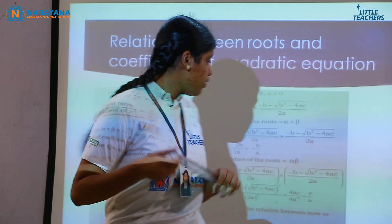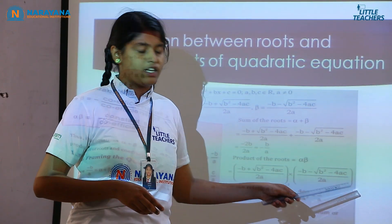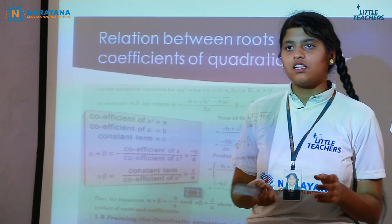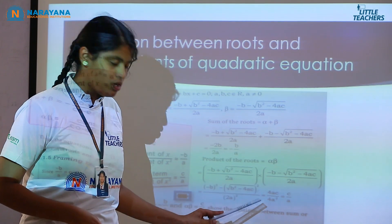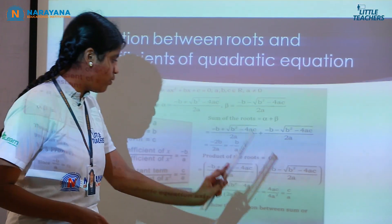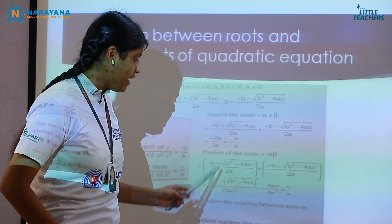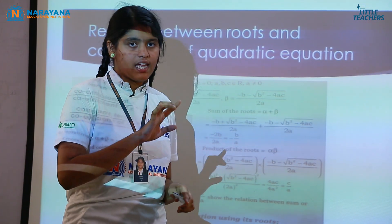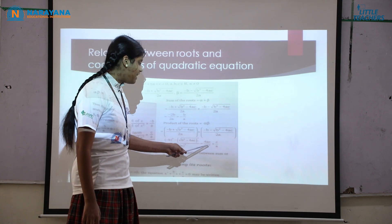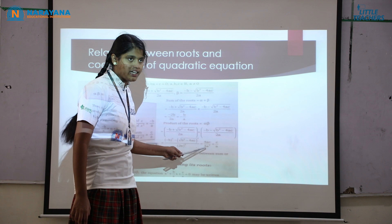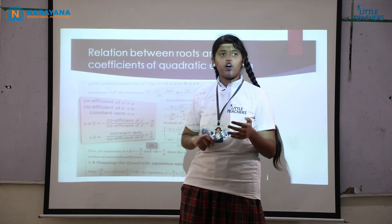Now the product of the roots: (−B + √(B² − 4ac)) / 2a × (−B − √(B² − 4ac)) / 2a. Using the formula (A + B)(A − B) = A² − B², we get (−B)² − (√(B² − 4ac))² all over (2a)². That gives B² − (B² − 4ac) over 4a², which simplifies to 4ac / 4a². The 4s cancel and one factor of a cancels, leaving C/A. So the product of the roots is C/A.